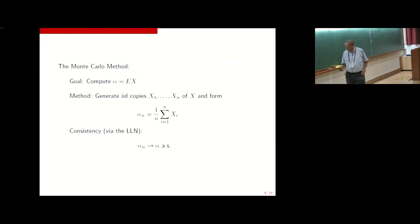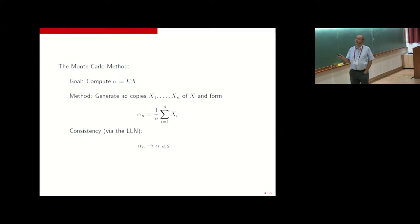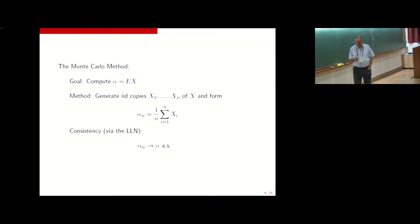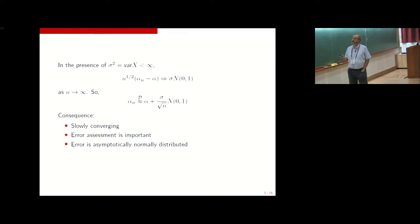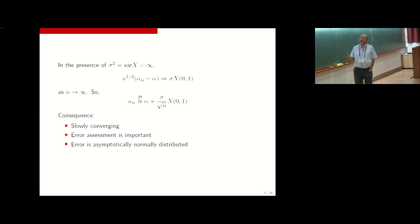In its most simple setting, the Monte Carlo method works as follows: we want to compute the mean of some random variable, we generate n i.i.d. copies, and then we average the x's. The law of large numbers tells us this algorithm is consistent — it converges as sample size n goes to infinity. Then we have a second-order result through the central limit theorem, which asserts that when you scale up the difference between the estimator and the true quantity by square root of n, that converges to a normal random variable.